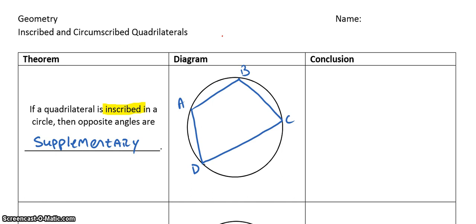Alright, now, when a quadrilateral is inscribed in a circle, there's a theorem that goes along with it. And, it says that the opposite angles are supplementary. Now, what that means is, angle A and angle C are supplementary. So, angle A plus angle C equal 180 degrees. And, B and D. Angle B plus angle D equals 180 degrees.